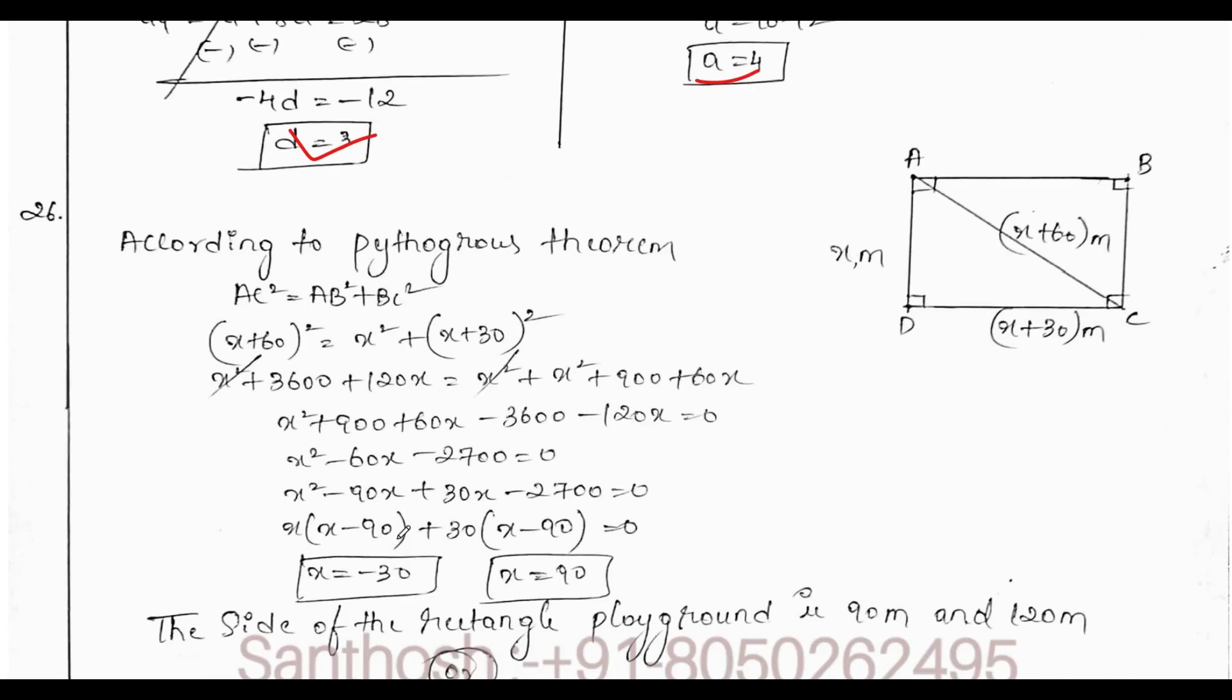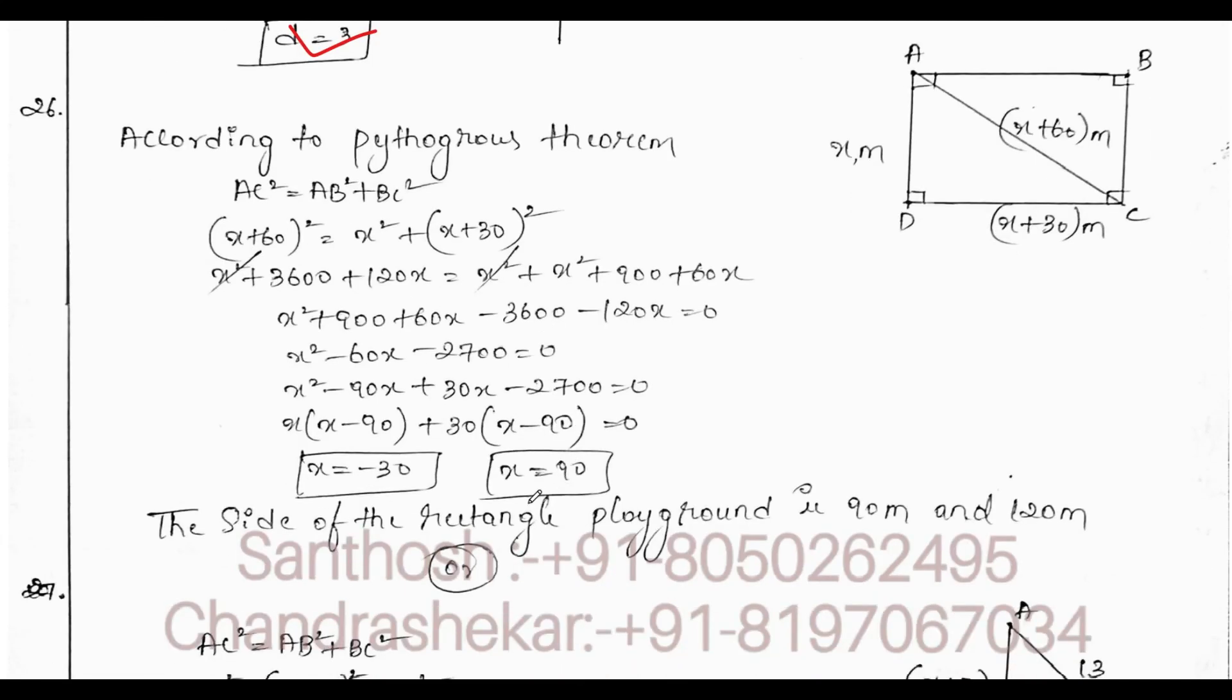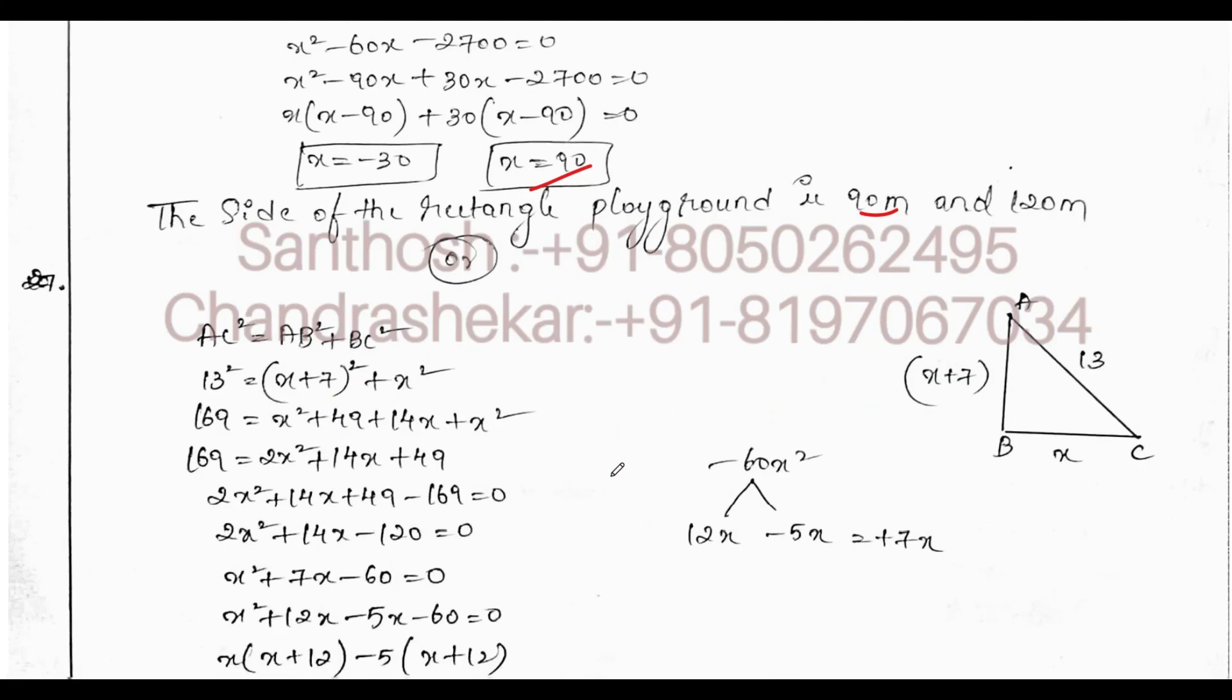This question is there in my worksheet. The quadratic equation based on the quadratic equation statement problem, it was asked for 3 marks. We get x equals 90. The side of the rectangular playground is 90 and 120 meters.